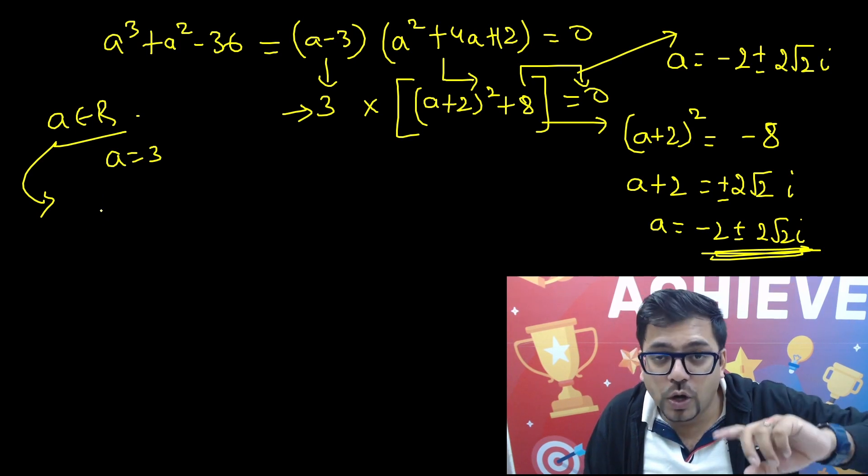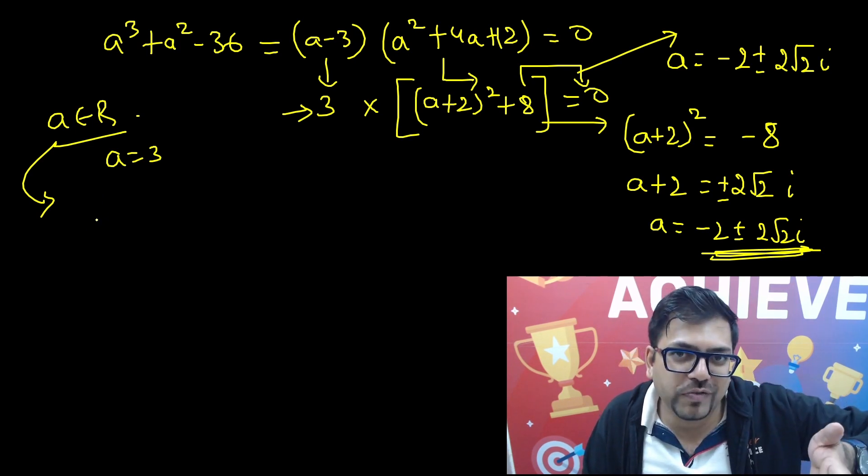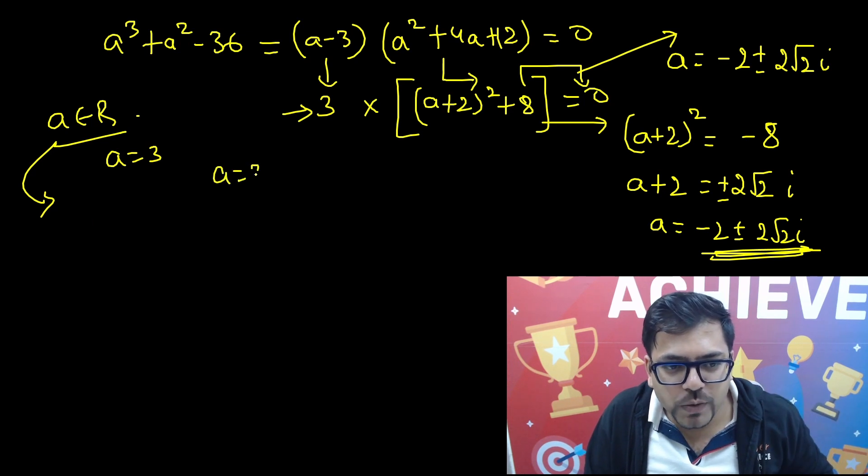If they are asking find the complex values, these are the answers. If they are asking find the sum of all the values or sum of all the roots, then also you can find it. So finally we have got a = 3, and hence that's the answer.